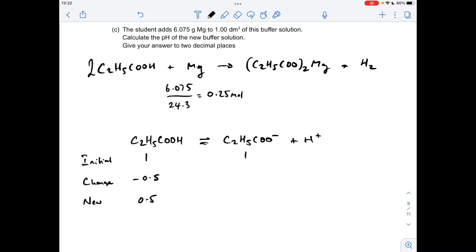And then if we look at what's going to happen to the propanoate ions, they're going to increase by 0.5. Just go back to this equation. So for every mole of magnesium that reacts, we get twice as many moles of propanoate ions formed. So we're going to get 0.5 moles of propanoate ions forming. That's going to go up from 1 to 1.5 moles per decimeter cubed.